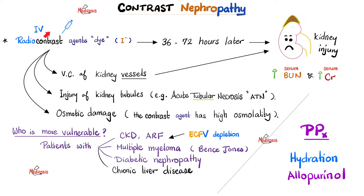When a doctor injects contrast dye — for example, in a contrast CT scan or intravenous pyelogram — and the patient had poor kidney function to begin with, 36 to 70 hours later they will start to suffer from symptoms of kidney injury. In the lab, serum BUN and serum creatinine are elevated because these waste products can no longer be cleared by the injured kidney. The radiocontrast agent causes vasoconstriction of renal vessels, lowering perfusion, and can also injure the tubules directly, causing acute tubular necrosis.